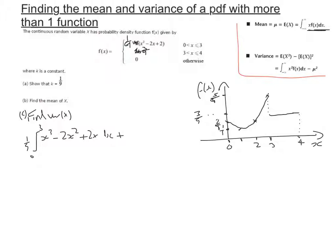Then I'm going to add the next function, which is between 3 and 4. If I multiply it by x, I'm going to get a third of x. So I'm going to take that third out, with x on the inside, between limits 3 and 4.